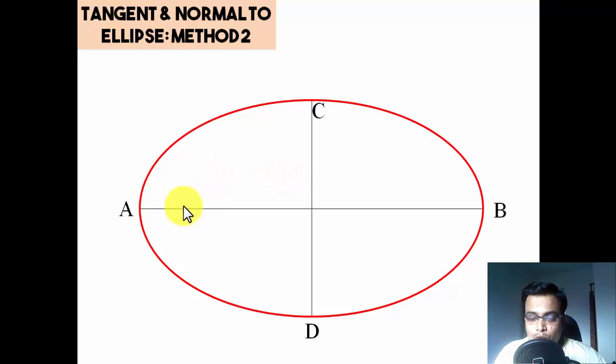Now with half of major axis, if I want to make the points, keep one leg of your compass here, other leg over here. So this is what you call the half of major axis as the radius. With C as the center, cut an arc over here to have focus one. Cut an arc again with C as center to have focus F2.